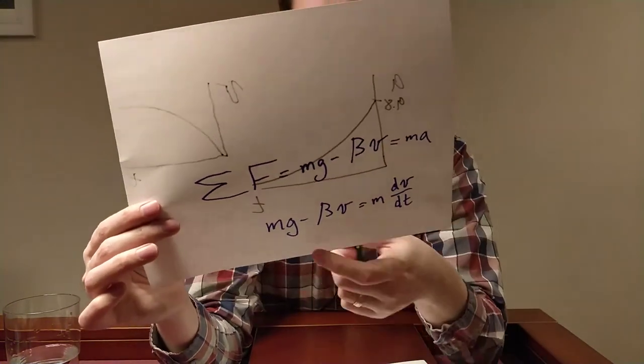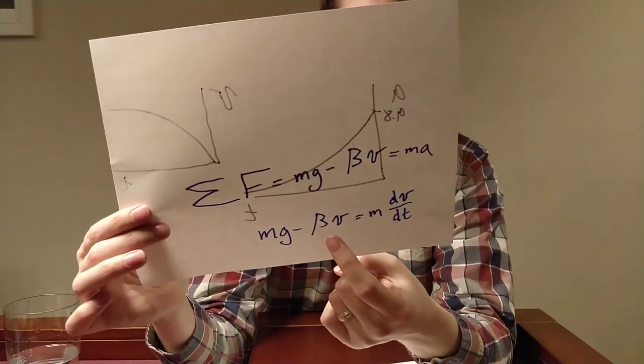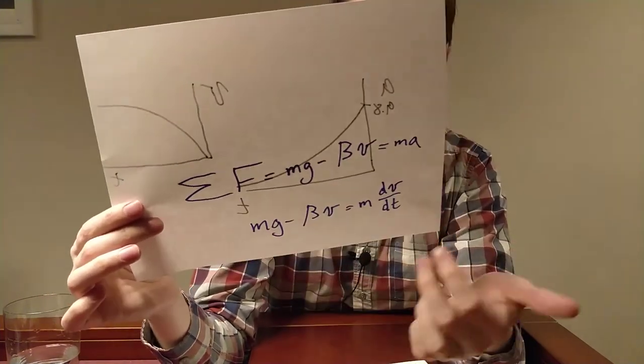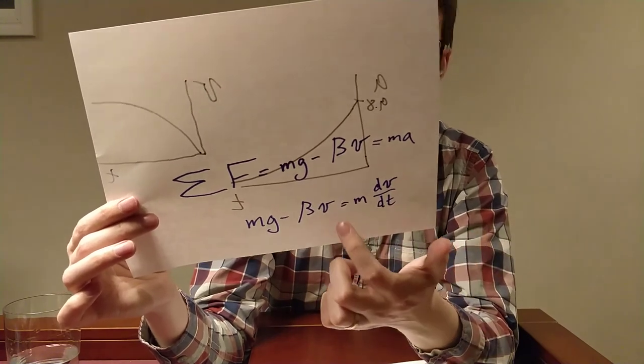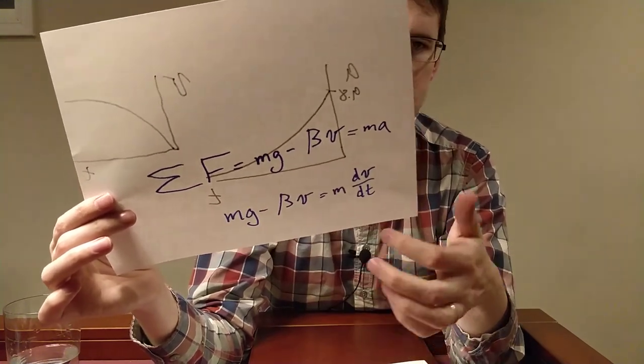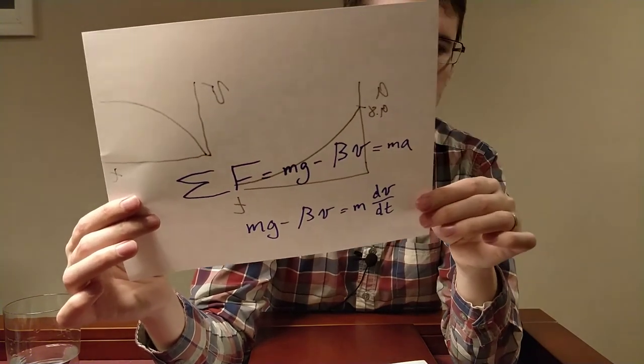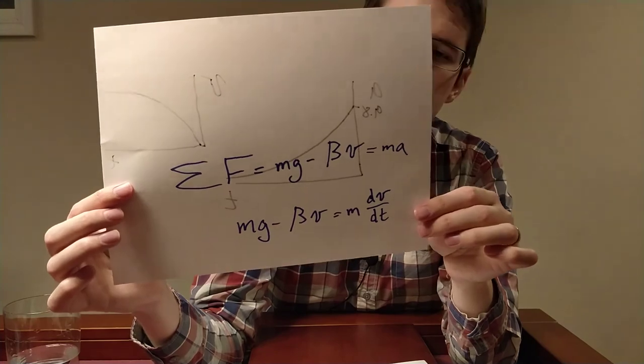All right, so we're back here. And we've got that mg, so this is just a constant, minus beta times V is equal to m dV dt. So this is a differential equation here. We solve this. Since it's got something, a derivative being equal to itself, it's probably going to look something like something exponential. And so that's what we're going to wind up with, is an exponential function. And you'll go through that math here today. All right, thanks.